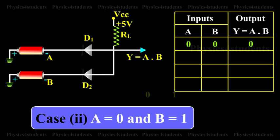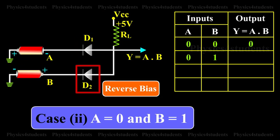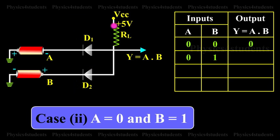Case 2: A is equal to 0 and B is equal to 1. When A is equal to 0 and B is high, diode D1 is forward biased and diode D2 is reverse biased. The diode D1 will now conduct due to forward biasing. Therefore, output Y is equal to 0.